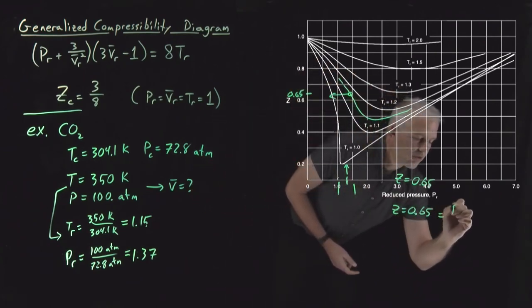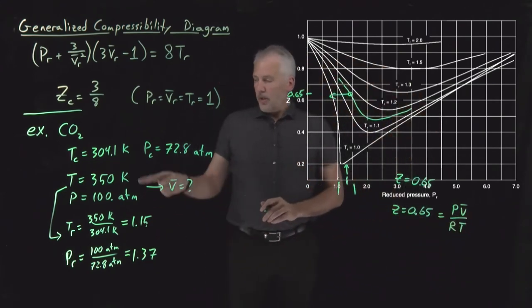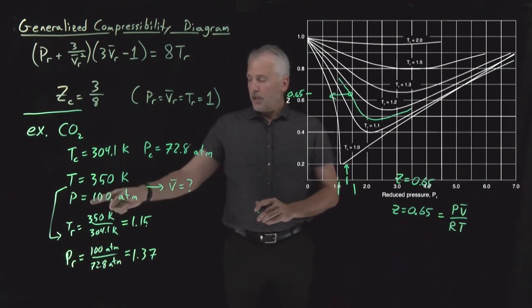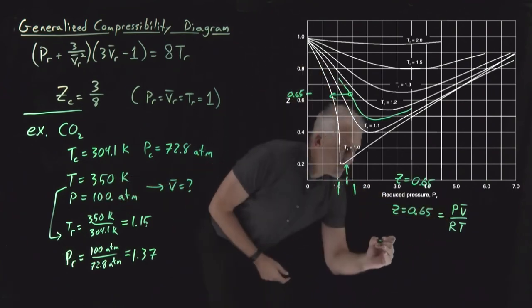Compressibility factor, of course, is PV bar over RT. We know what the pressure and the temperature are. We know what Z is. We just need to figure out what the molar volume is.